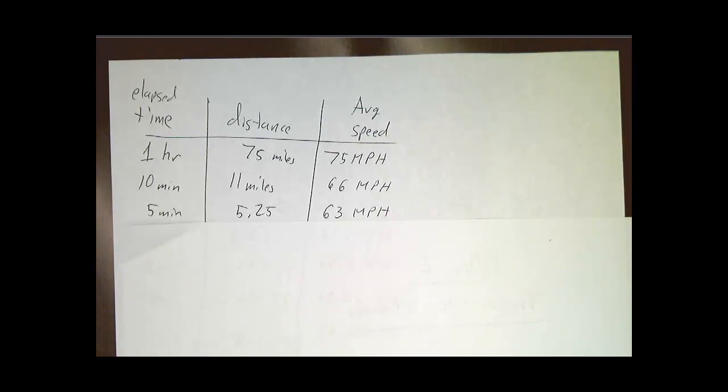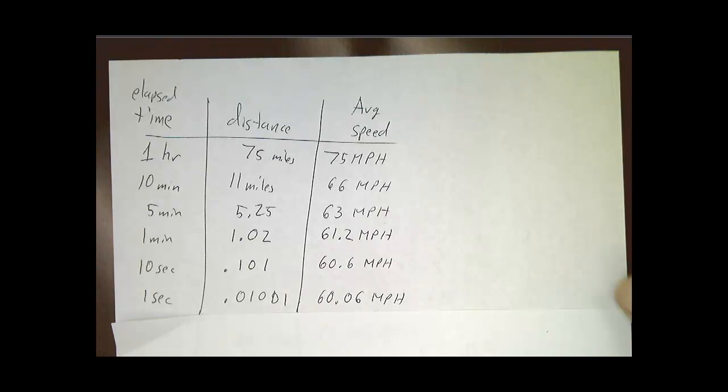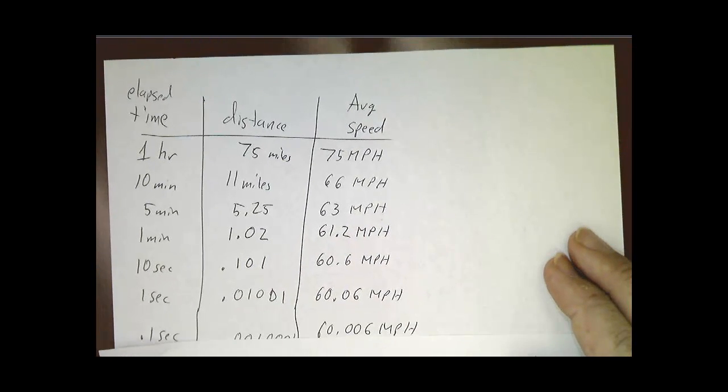Maybe over the last 5 minutes you went 5.25 miles. The last 5 minutes you've been averaging 63 miles an hour. Maybe over the last minute you've been averaging 61.2 miles an hour. If you average over shorter and shorter periods of time, you get a better and better sense of what your speed is right now.